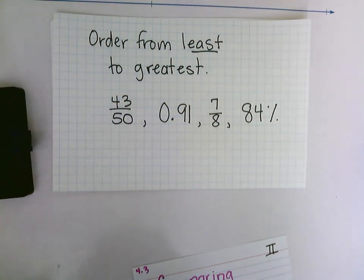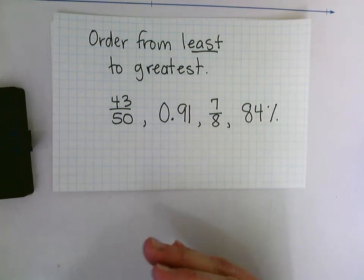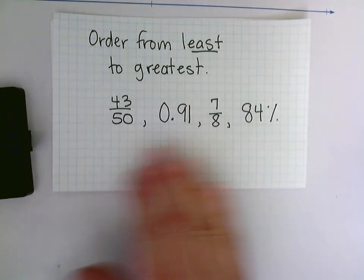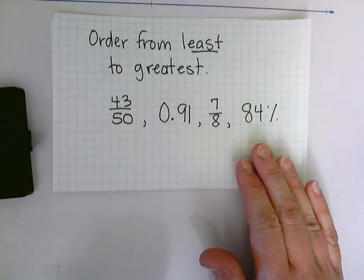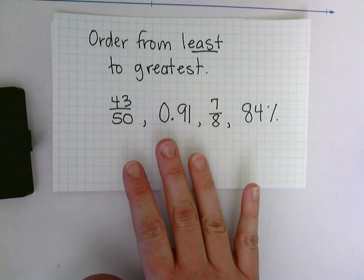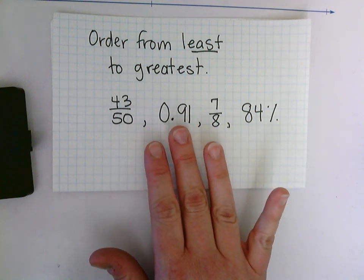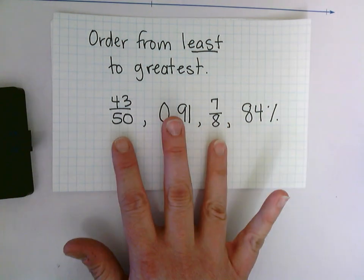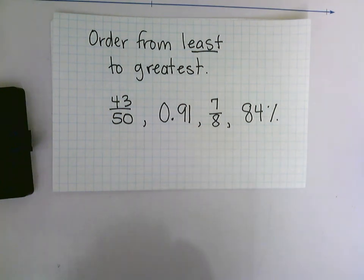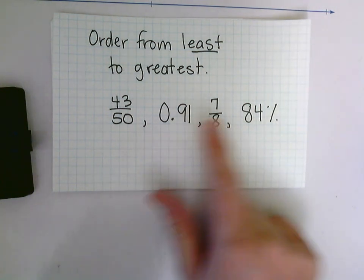The best way to order these is to put them all into the same form. We either want to have all fractions, all decimals, or all percents, and that will make it very easy to put them in order. The easiest would be to put them all as decimals or all as percents because fractions, when they have different denominators, are harder to put in order. So let's go ahead and change them all to percents.